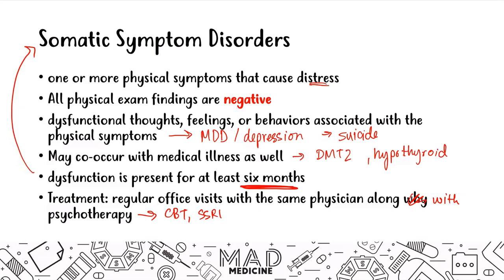That will also be present in the vignette for Step 1. They'll present somatic symptoms and ask what's the best course of treatment. They'll offer SSRIs, MAOIs, maybe benzodiazepines — but the right treatment is going to be regular office visits with the same physician. That is somatic symptom disorder in a nutshell.